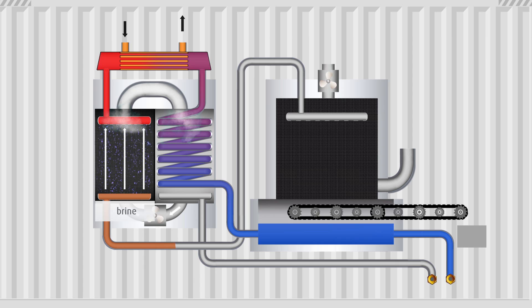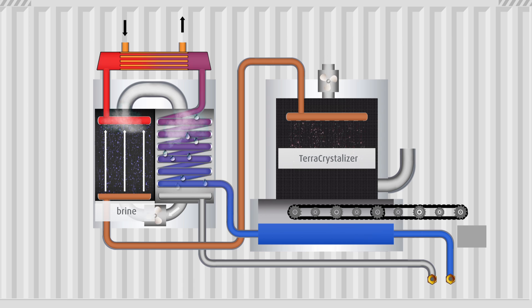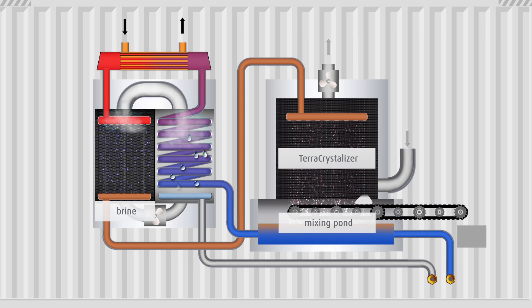The concentrated raw water from the evaporator, the brine, is collected and fed into the Terra crystallizer. From there, it enters into the mixing pond where it mingles with fresh North Sea water and is again fed to the evaporator unit.